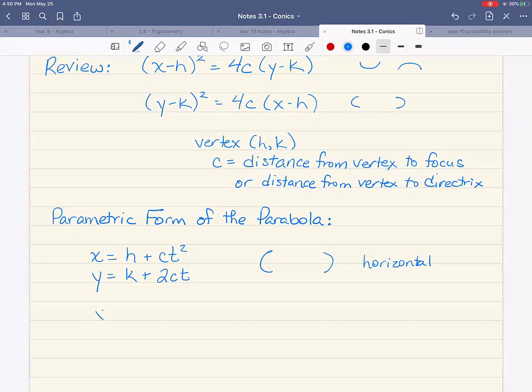Now, in order to get the vertical parabolas, you still keep h and k in front of the x and y, but you switch the entire second terms. This one gets the two c t. This one gets the c t squared. And this makes the parabolas open up or down, which we call a vertical parabola.